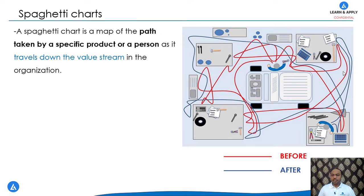This spaghetti diagram consists of two parts. The first part is before improvement and second part is after improvement. The before part is typically indicated by the red color and the after part can be indicated by the blue color or the green color.